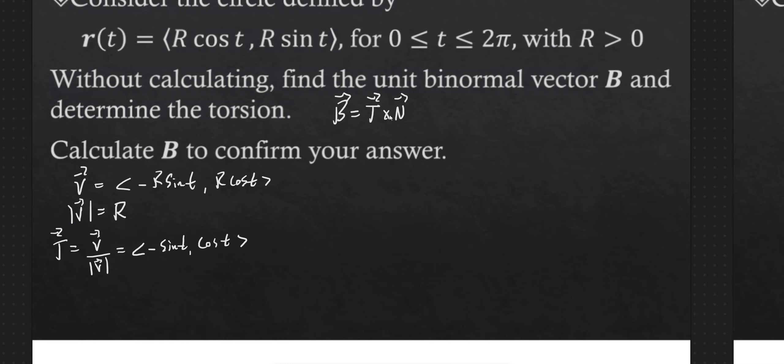And we also have to get a hold of n, and let's remember what n is. How do we get a hold of n? n is dt/dt divided by magnitude of dt/dt. So let's go ahead and take a derivative of t here. So dt/dt will be minus cos t and minus sin t.